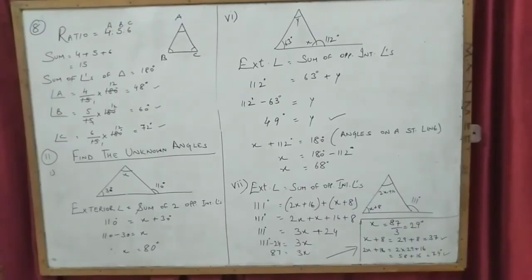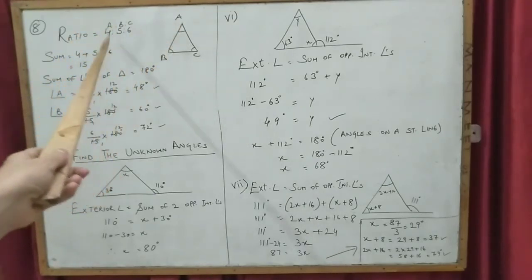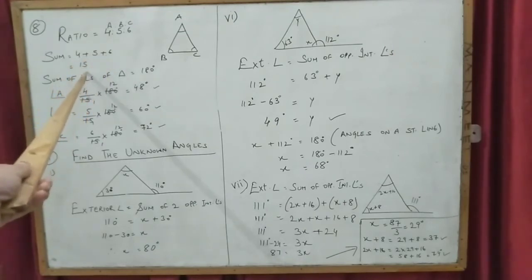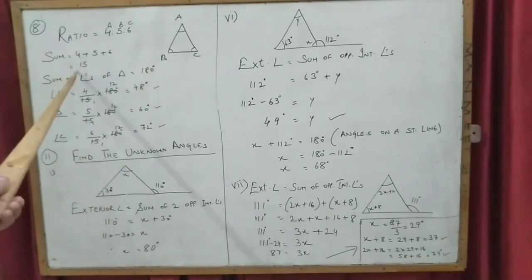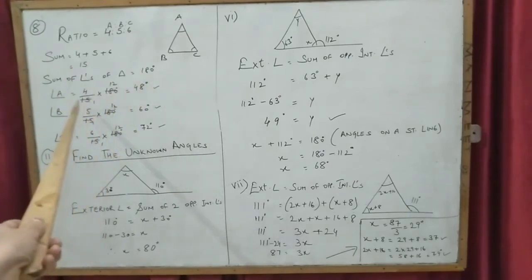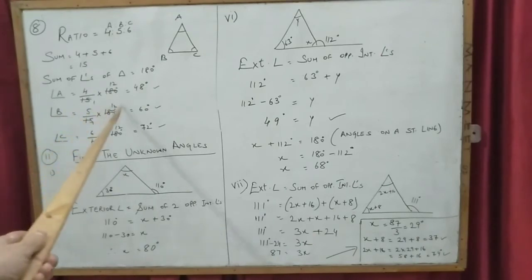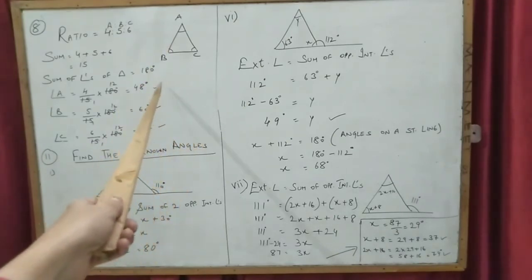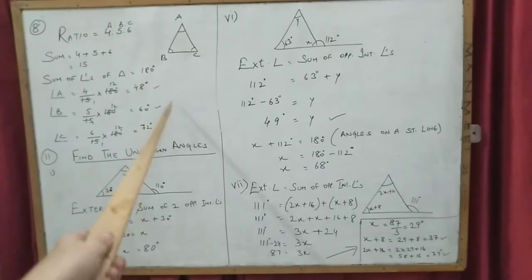Question 8: calculate the angles of a triangle in ratio 4:5:6. Suppose angle A : angle B : angle C equals 4:5:6. The sum of the ratio is 4 plus 5 plus 6 equals 15. Angle A equals (4/15) × 180 equals 48 degrees. Angle B equals (5/15) × 180 equals 60 degrees. Angle C equals (6/15) × 180 equals 72 degrees. Verification: 48 plus 60 plus 72 equals 180 — correct.